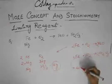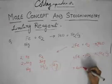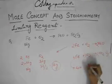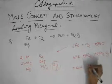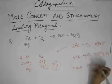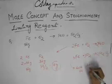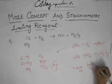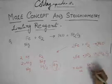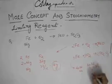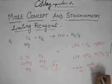So here 4 times 56 grams of iron react with 3 times 32 grams of oxygen. So 56 grams of iron would react with 3 by 4 times 32 grams of oxygen, which would be 24 grams of oxygen.